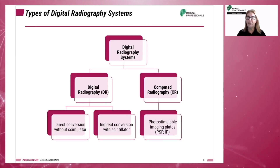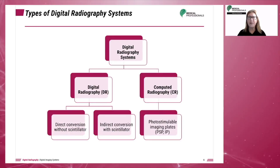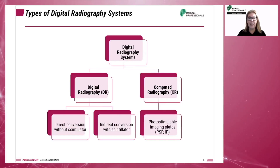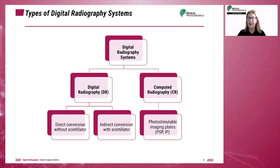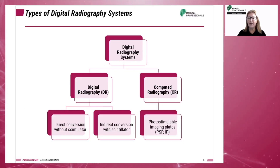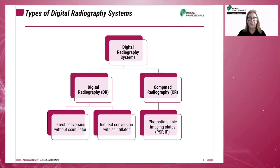Digital radiography, or DR, usually refers to an image receptor that may be inside a device bearing some resemblance to a traditional cassette, or the image receptor may be part of the X-ray equipment itself and never handled by the radiographer. In either case, once the exposure is taken, the image data is sent to a computer and the image receptor is immediately ready for the next exposure. DR uses flat panel detectors with thin film transistor technology that are categorized as direct capture or indirect capture.